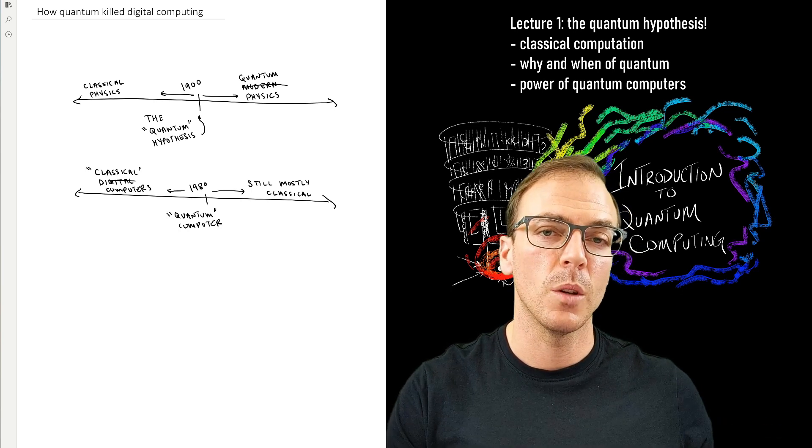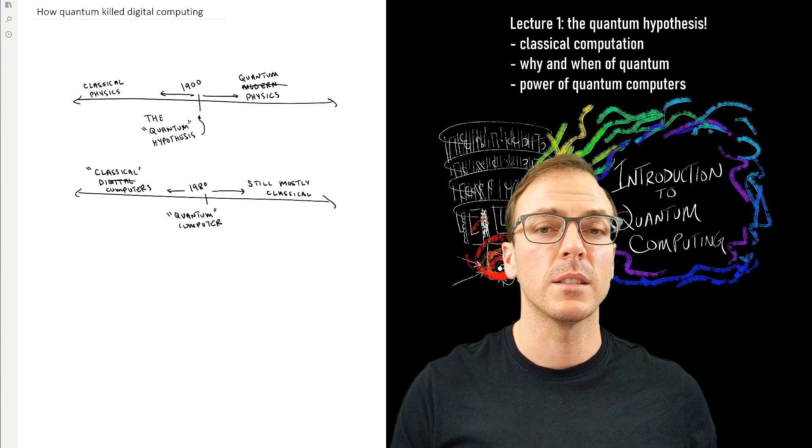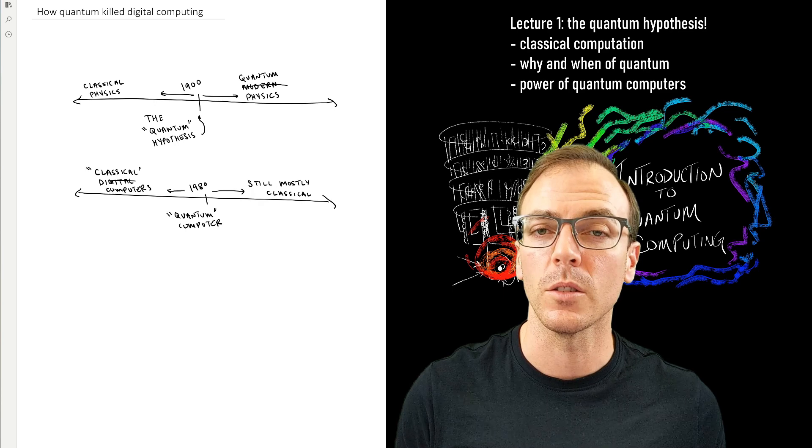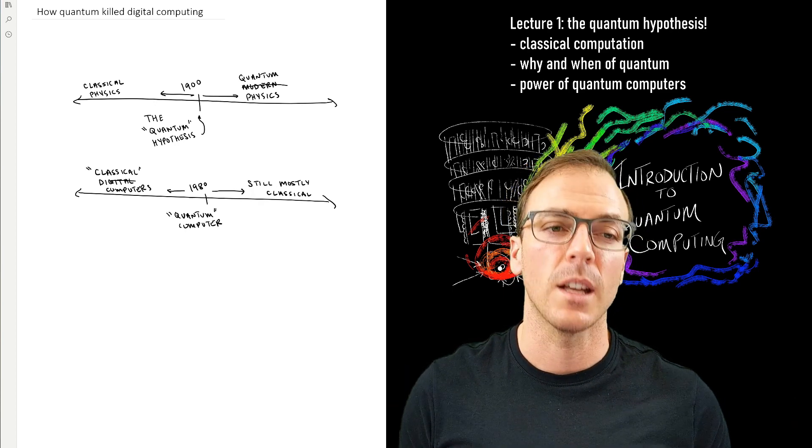Classical computers, in principle, could be built with devices that only require knowledge of classical physics, whereas quantum computers will require quantum mechanics to understand.